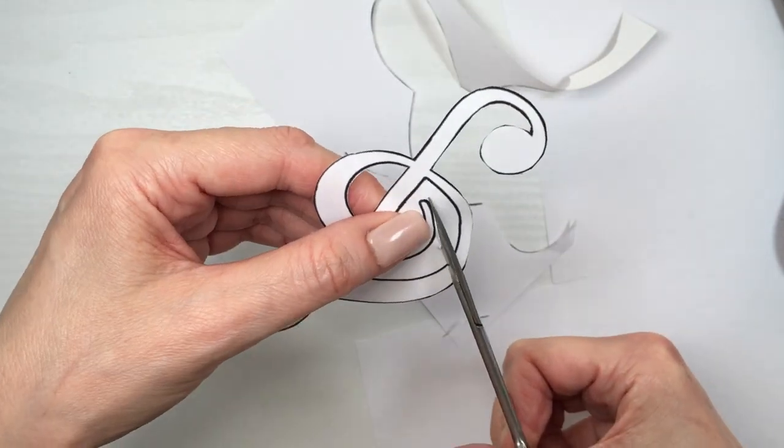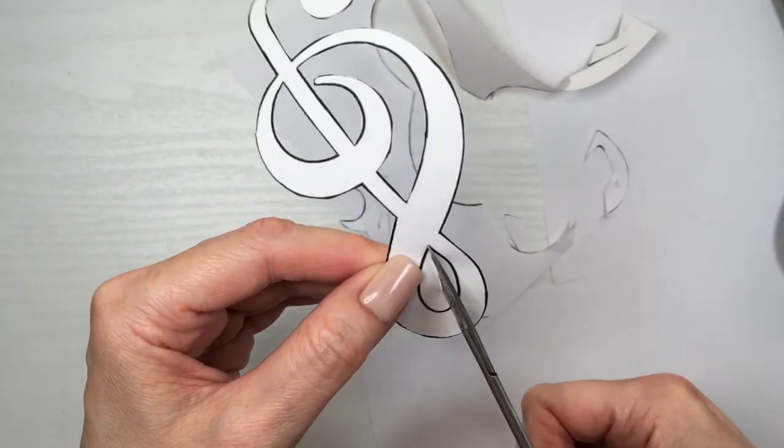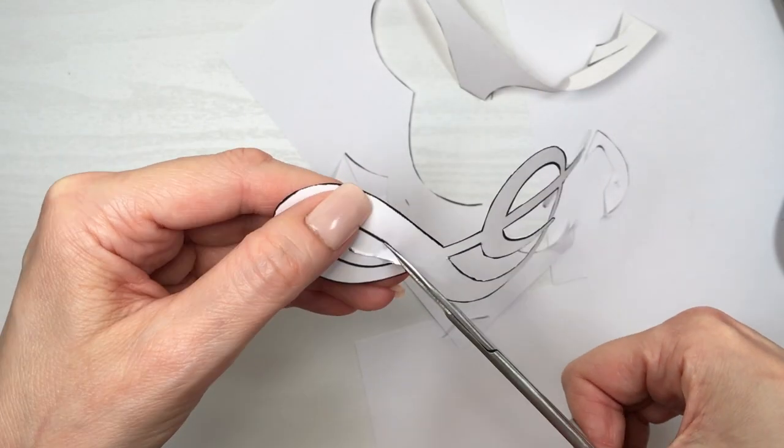I'm just going to be using these detail scissors. These are just to trim like fake eyelashes or eyebrows. Making a hole and then just cutting that.